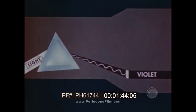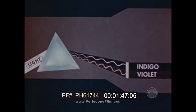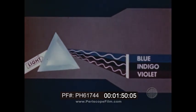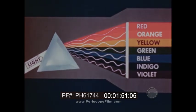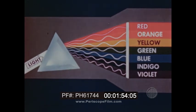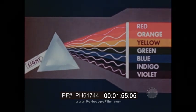As the light waves pass through the prism, they are bent or refracted. The shortest waves, those producing the sensation of violet, are refracted the most. Indigo a little less, blue still less, and so on through the spectrum to the waves of red, which are the longest and are refracted the least.